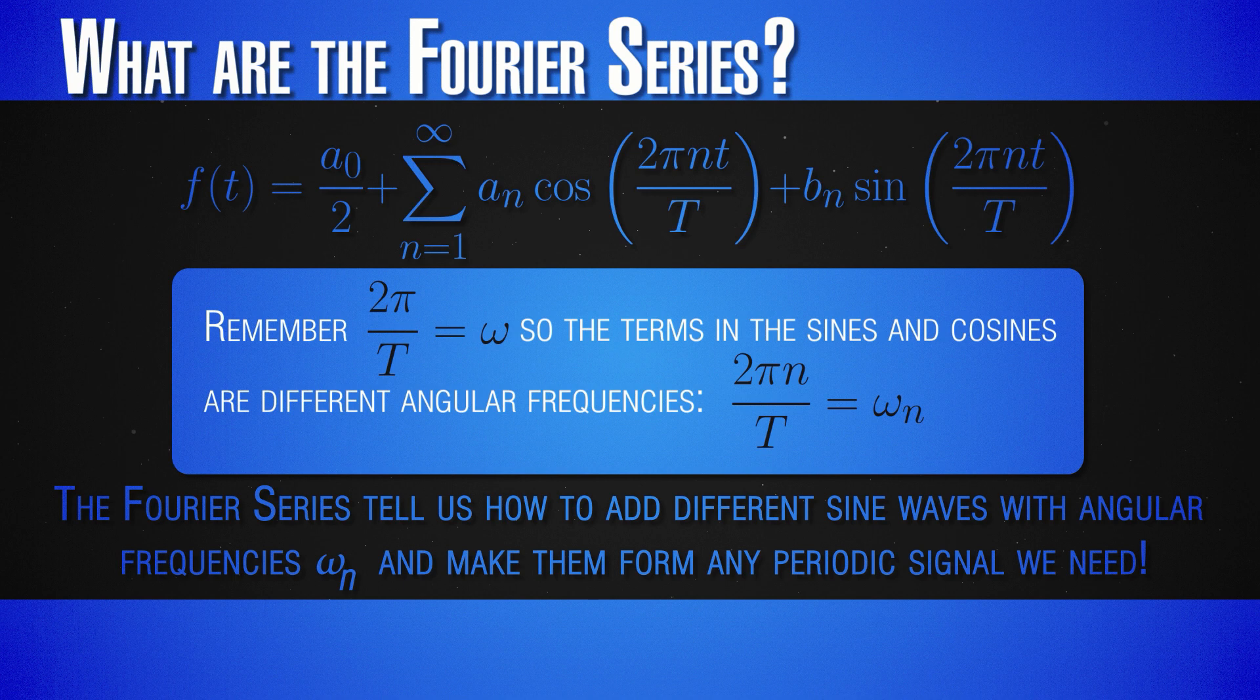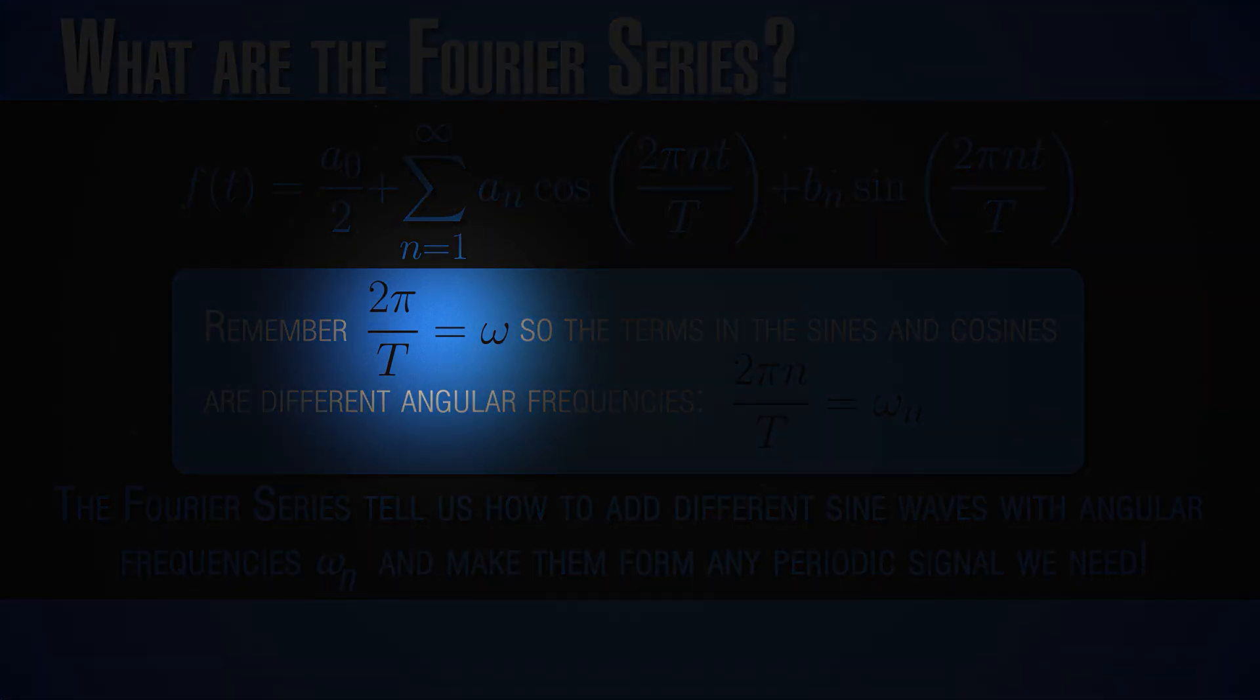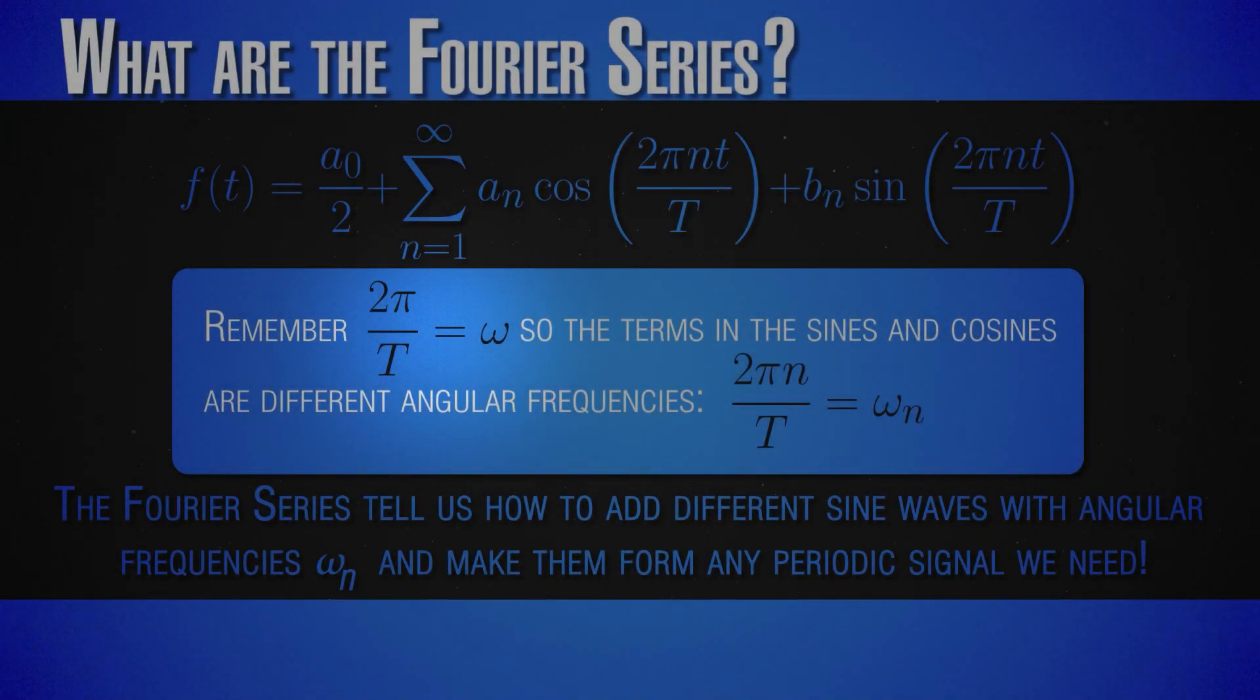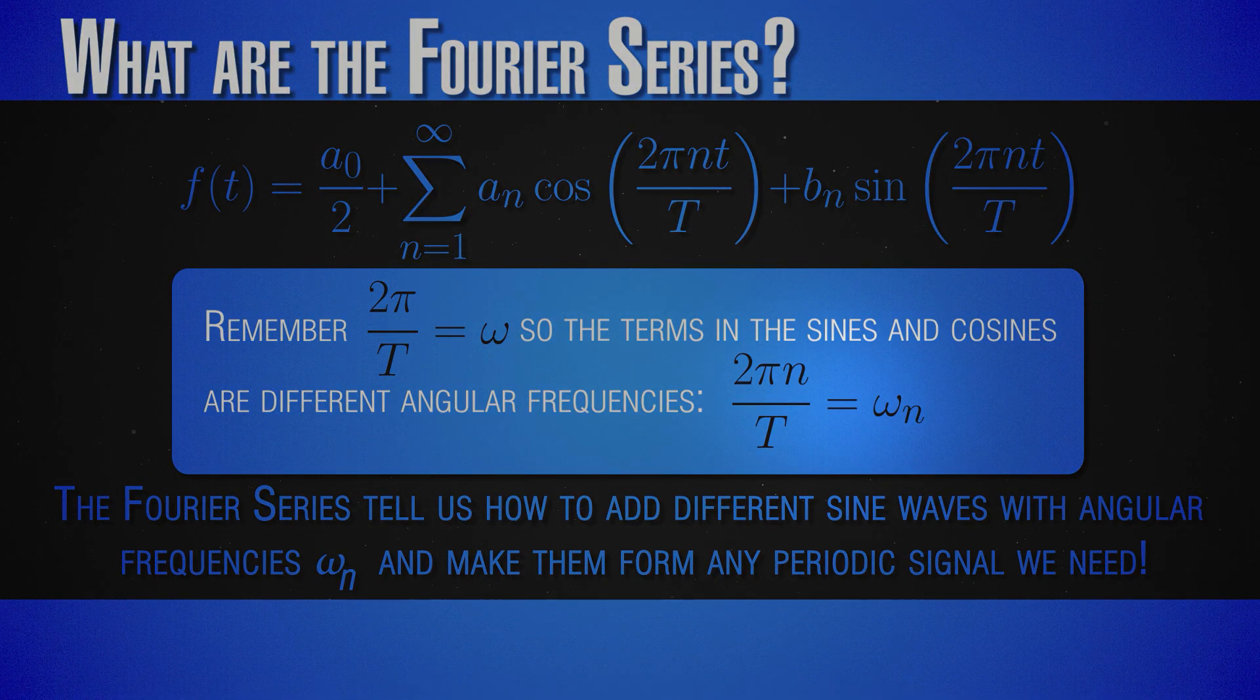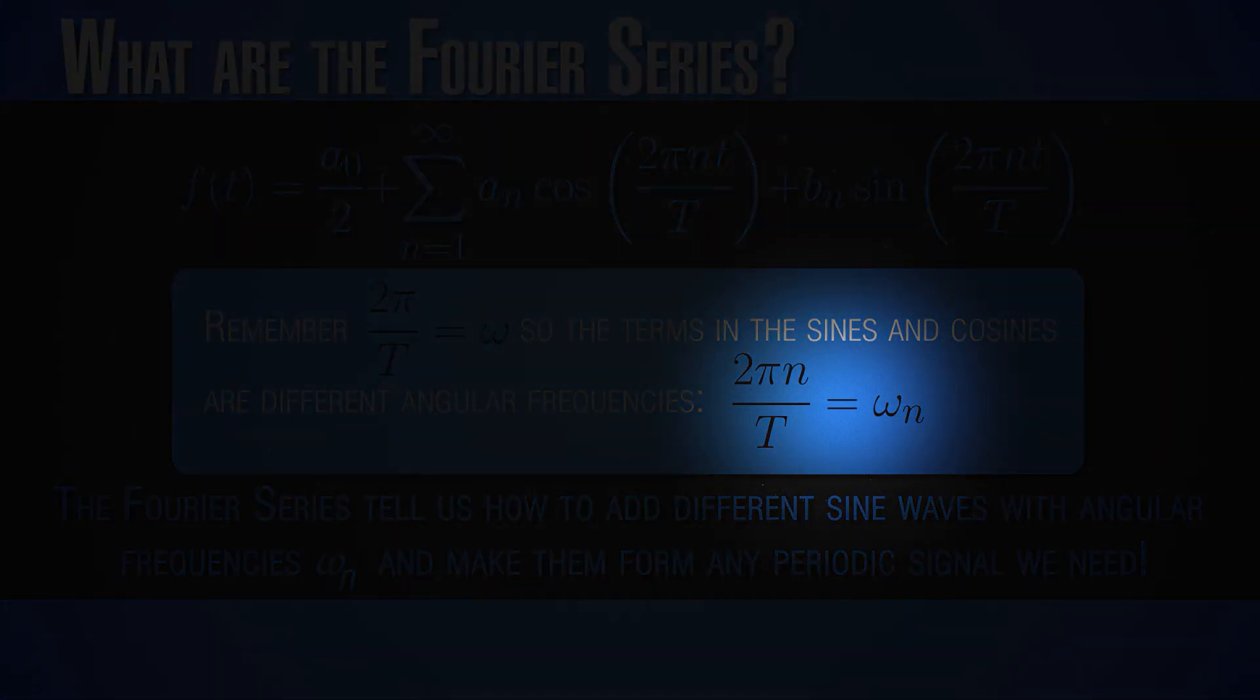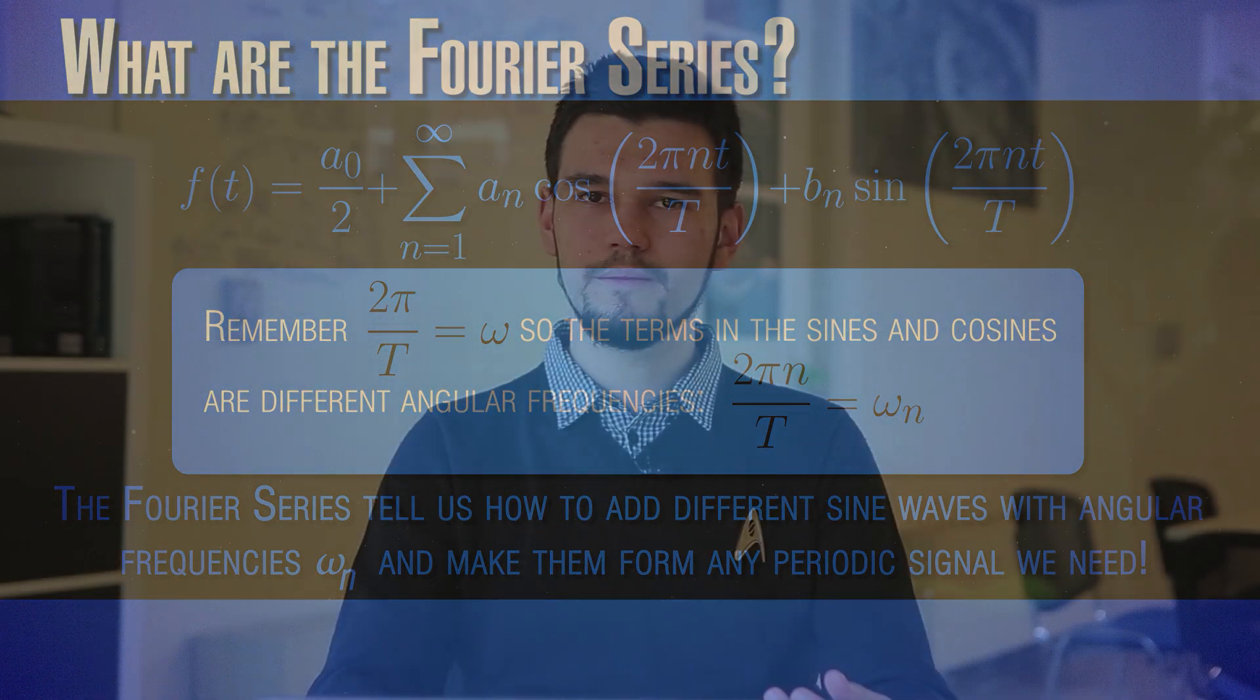Now what we immediately note is that we don't have just any angular frequencies in this sum. We don't have any omega we would consider. We have only integer numbers of the fundamental angular frequency for that signal. So we defined an angular frequency in a free wave, in a sine wave, as being 2π divided by the period. But in a general periodic signal, we see that this would correspond to 2π divided by the period of the signal itself. However, we see that in its Fourier decomposition, we don't have only this angular frequency. We have an infinite number of angular frequencies that are sometimes called harmonics, and each of those angular frequencies is an integer multiple of this initial original angular frequency.